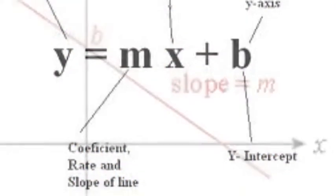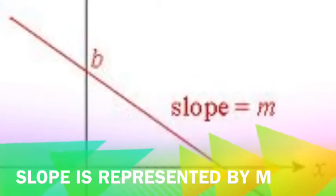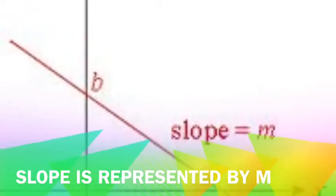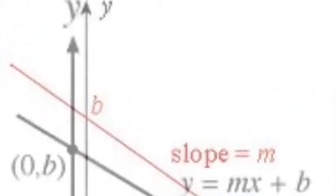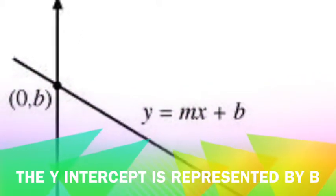Slope intercept form: M represents slope, and B represents the y-intercept.